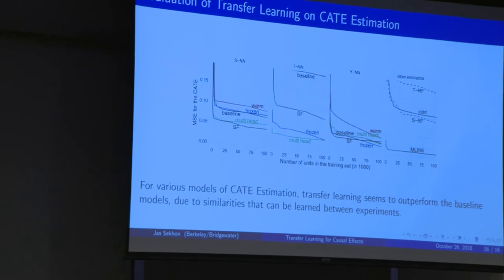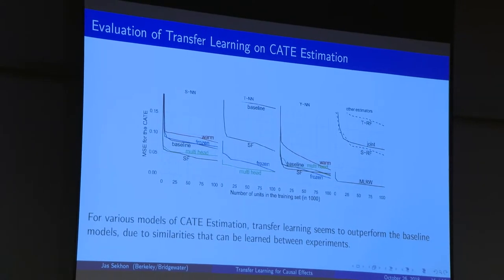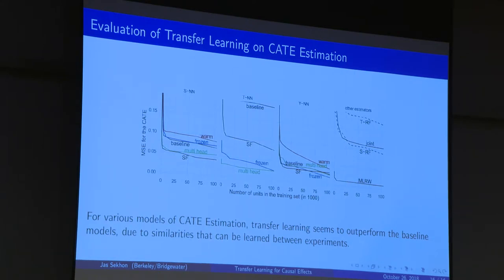These aren't direct data results — we build simulations off the data to be as close to the data as possible. The panel SNN is like a single learner: you pool treatment and control, making treatment a single covariate. TNN estimates treatment and control separately, then takes a difference of estimates. Our last approach is MLRWs — our meta-learning model on top of our neural architectures — and these are the standard random forest models for that problem.